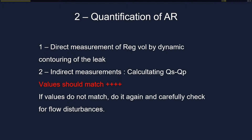The important point is quantification. You have two ways to quantify the leak: first, direct measurement of the regurgitation volume by dynamic contouring of the leak; or indirect measurement by calculating systolic flow minus pulmonary flow. It's very important that these values match — if they don't, there is an error somewhere. There are many possibilities of flow disturbance that may impair the real value, but with this cross-check it becomes easy with a little experience.